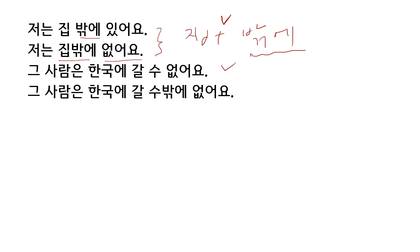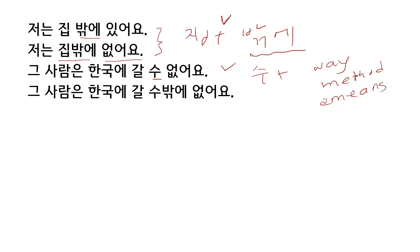그 사람은 한국에 갈 수 없어요. That person cannot go to Korea. Here, 수 means a way, a method, a means. So this means there is no method, there is no way, there is no means for me to go to Korea. This is the literal translation of 한국에 갈 수 없어요.